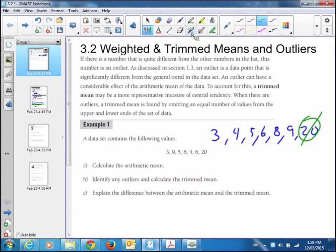If you cancel the highest, though, you've got to cancel the lowest to have a good trimmed mean. That leaves the five data points in the middle. Part A: calculate the arithmetic mean. If you added all seven of those numbers up, you get 55. That's 3 plus 4 plus 5. So divide it by the 7. That gives you 7.9.